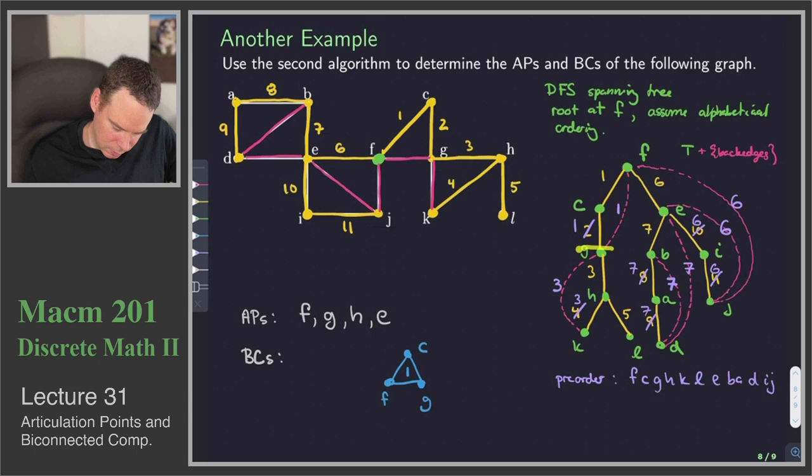What's next? Well, we have all these edges that were labeled 3s. That's G, H, and K. G, H, and K. So that's that part.